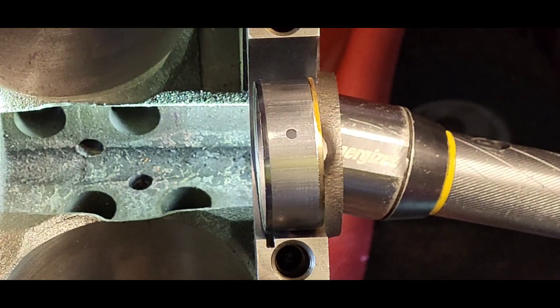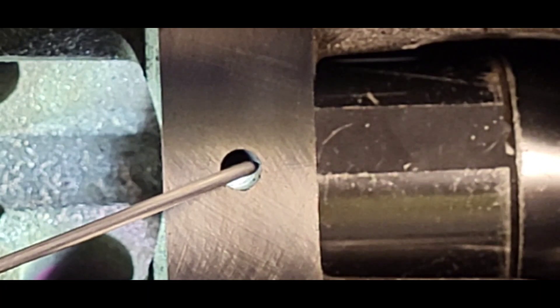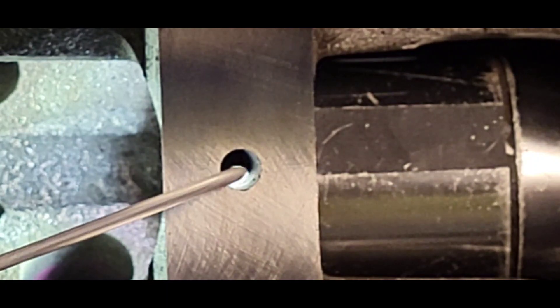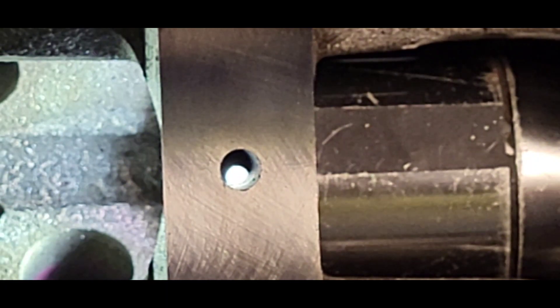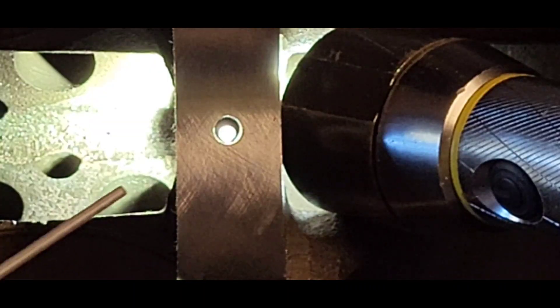This is the number two saddle for the crank, looking down this hole at where the cam bearing is. The number two cam bearing is still in this block, and that's the alignment that the machine shop made because they installed the cam bearings in this motor.